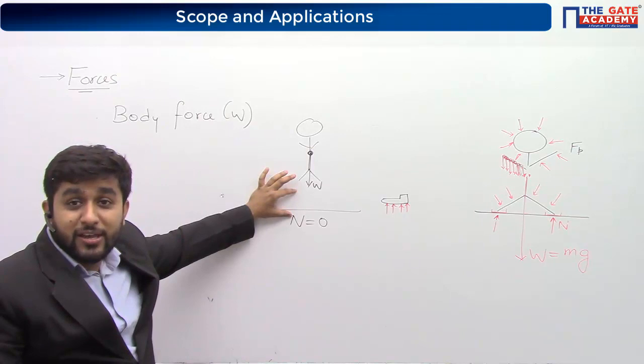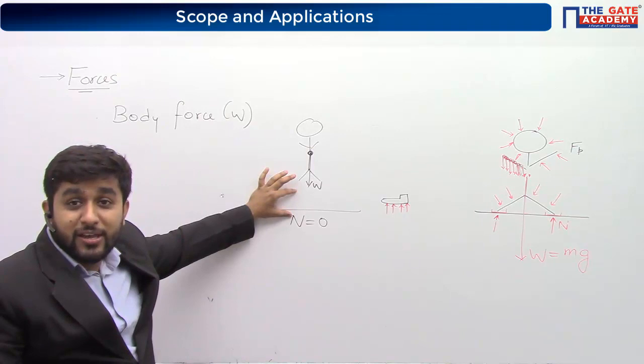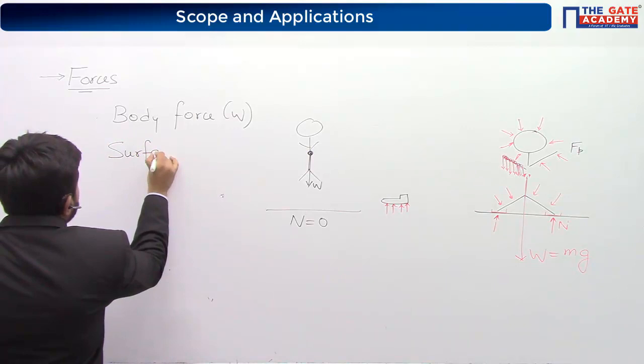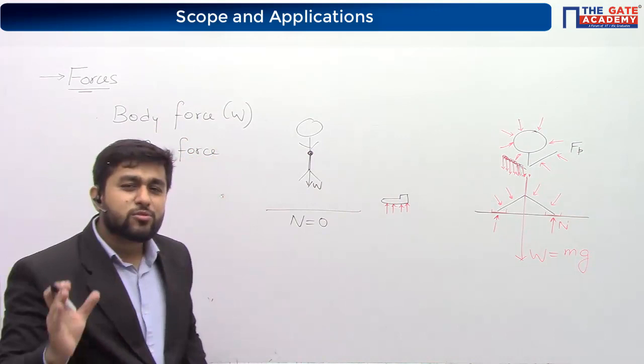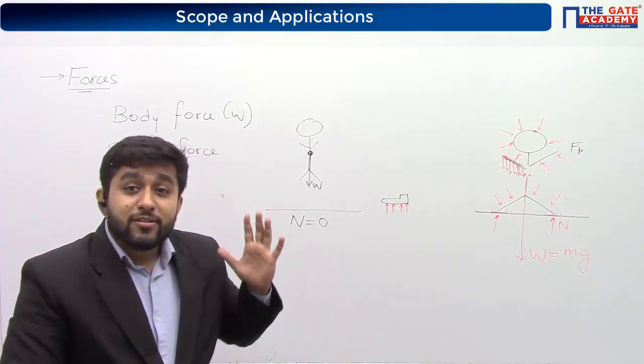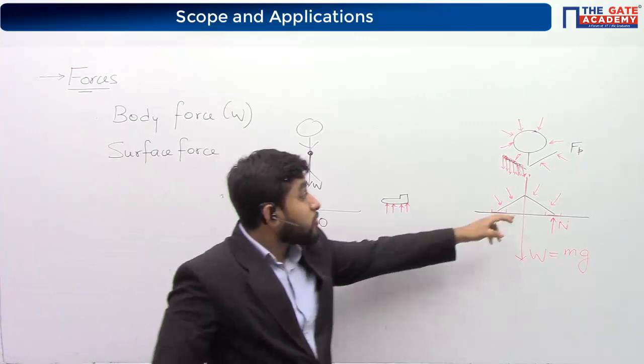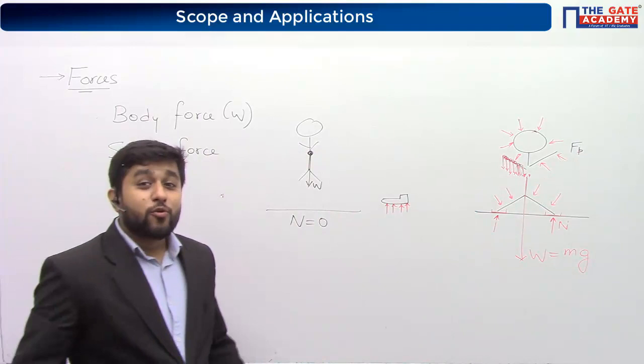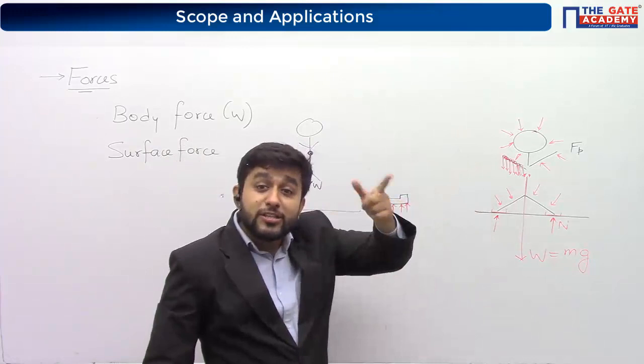There are two types of forces: body forces - gravitational, magnetic, electric - and surface forces, meaning the force applied by surrounding medium on the surface of the body because of direct contact. Normal reaction is a surface force. Pressure force is also a surface force because air applies it on the surface of the body by direct contact.